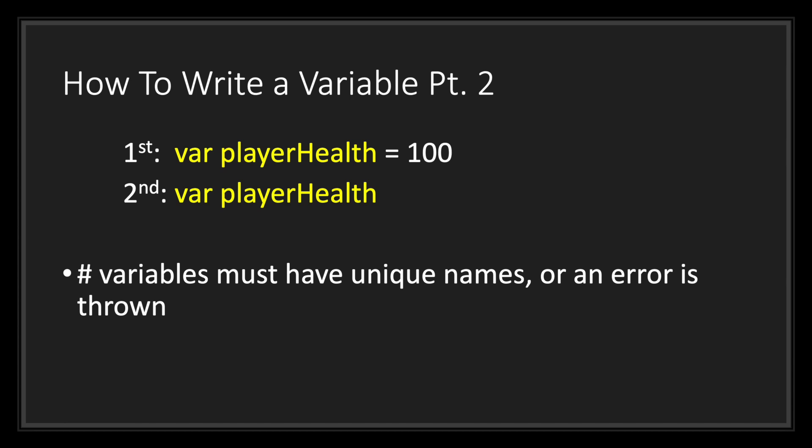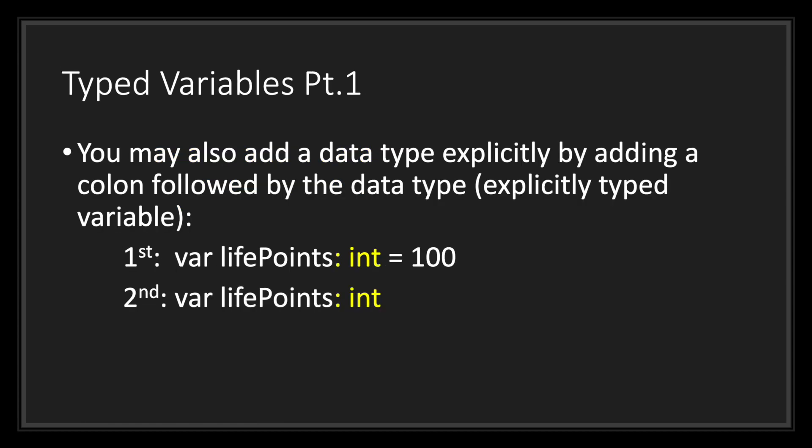Variables must have unique names or an error is thrown. In GDScript you can also use something called typed variables. A typed variable is just a data type that is explicitly declared on your variable by adding the colon symbol followed by the data type in which you wish to limit your variable.